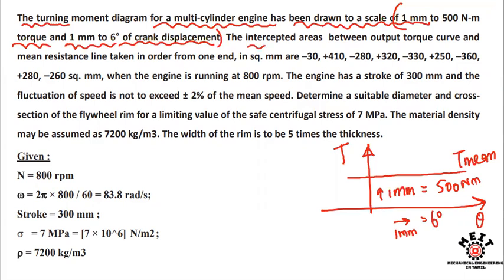The intercepted areas between the output torque curve and the mean resistance line, taken in order from one end, in square millimeters are: minus 30, plus 410.